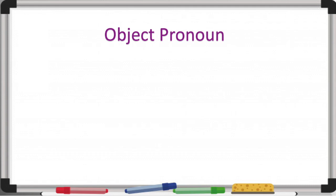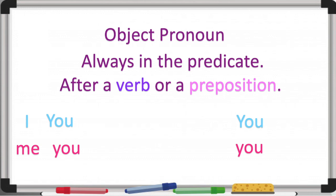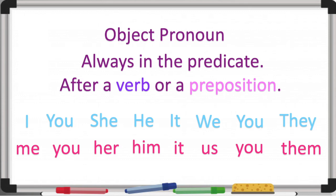Let's wrap up. For the object pronoun, it will always go in the predicate and we use it after a verb or a preposition. For 'I' the object pronoun is 'me.' For 'you,' it's 'you' for singular and plural. For 'she,' it's 'her.' For 'he,' it's 'him.' For 'it,' it's 'it.' For 'we,' it's 'us.' And for 'they,' we use 'them.'